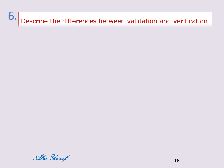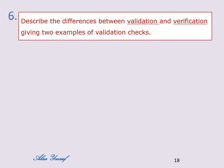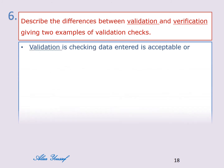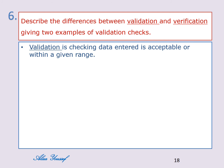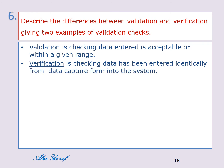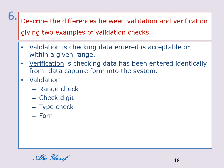Question number six: describe the differences between validation and verification, giving two examples of validation checks. Validation is checking that data entered is acceptable or within a given range. Verification is checking that data has been entered identically from the data capture form into the system. Examples of validation checks are: range check, check digit, type check, format check, presence check, and length check.